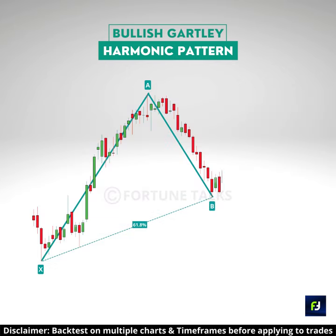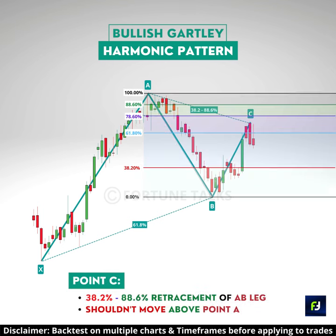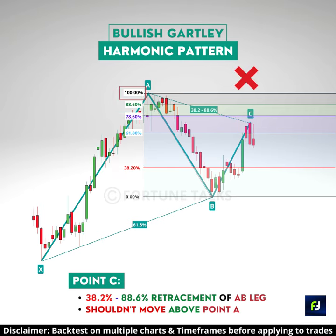The price reverses again from point B, shown by BC. The BC move should retrace between 38.2 to 88.6% of the AB move. If the BC move retraces above point A, the pattern becomes invalid.